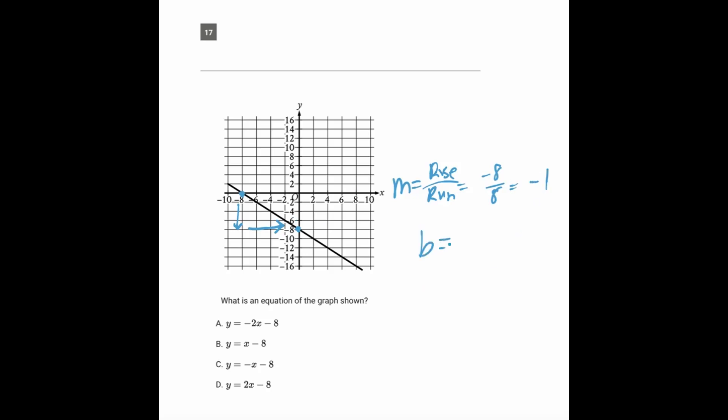Now the y-intercept, the b, well that's this point right here. That's where it's hitting the y-axis, and that's negative 8. So putting that together as y equals mx plus b, we have y is negative 1x minus 8.